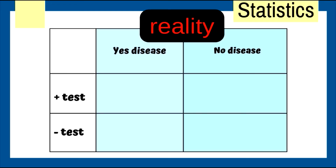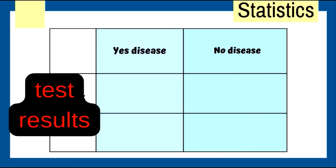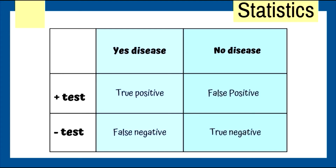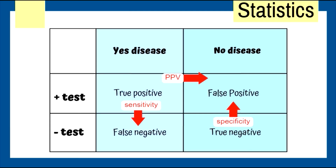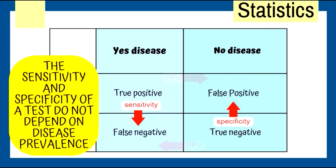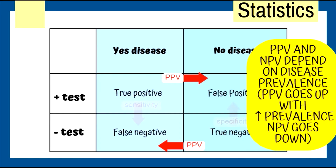Sensitivity and specificity: reality goes on top, test results on the side. Sensitivity starts with true positive over true positive plus false negative. Specificity starts with true negative over true negative plus false positive. Positive predictive value goes to the right; negative predictive value to the left. Sensitivity and specificity do not depend on disease prevalence — they are intrinsic to the test. But PPV and NPV do depend on prevalence: PPV goes up with increased prevalence, NPV goes down.